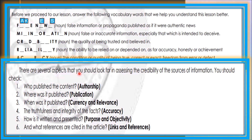There are several aspects you should look for in assessing the credibility of sources of information. First, who published the content — that is authorship. Second, where was it published — the publication. Third, when was it published — the currency and relevance. Fourth, the truthfulness and integrity of the facts — accuracy. Fifth, how is it written and presented — purpose and objectivity. Sixth, what references are cited in the article — links and references.